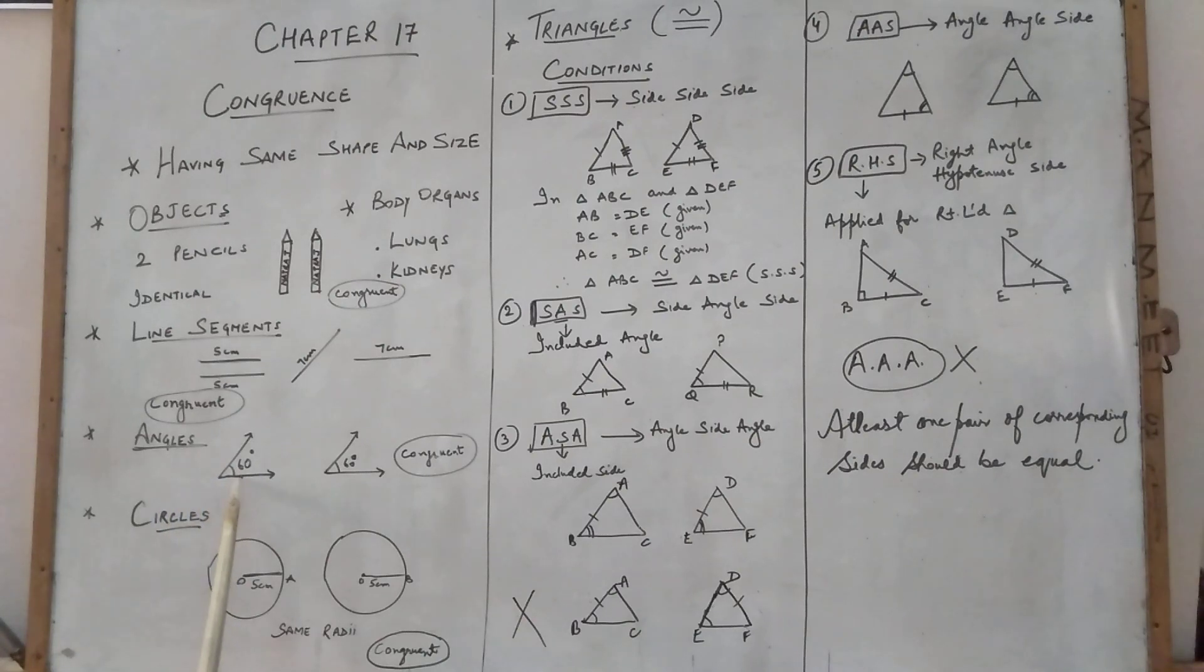If we take two angles, suppose first is 60 degree, second is also 60 degree, means both are congruent. If two are 50 degree, then also congruent.